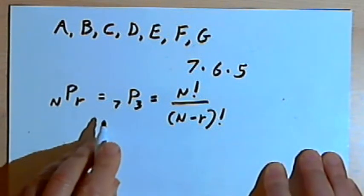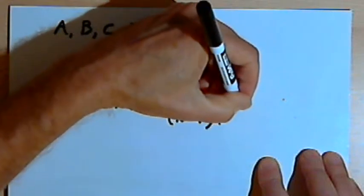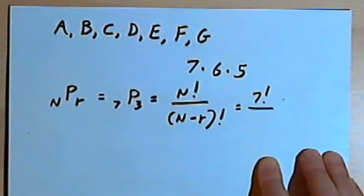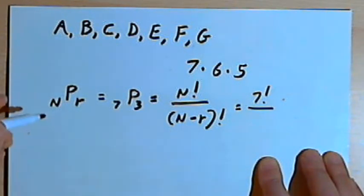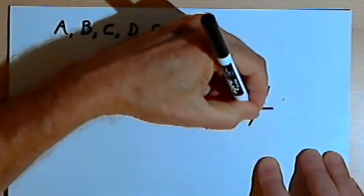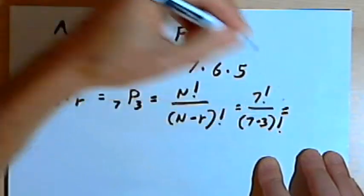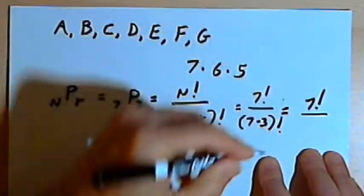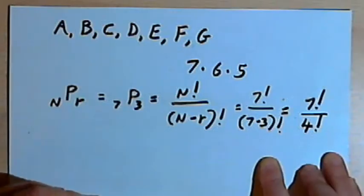Now the formula is N factorial divided by N minus R factorial. So in the case of this problem, N would be seven, the total number of objects. So I'll have N factorial. And then since R is the number of objects I'm taking, I would have N minus R as 7 minus 3. And that's factorial. And I can turn that into 7 factorial over 7 minus 3 is 4. So that's 4 factorial.